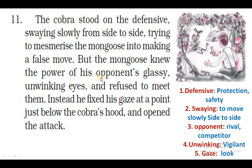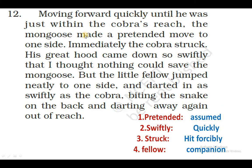But the mongoose knew the power of his opponent's glassy, unblinking eyes, and refused to meet them. Lekin nevla apne pratidvandi ki na jhapakne wali aankhon ki power ke baare mein jaanta tha, aur usne us se apni aankhein nahin milaai. Instead, he fixed his gaze at a point just below the cobra's hood. Nevle ne cobra ki aankhon mein na dekhne ki bajaye, usne apni nazrein cobra ke hood ke neeche fix kar li. And opened the attack, moving forward quickly. The mongoose made a pretended move to one side.